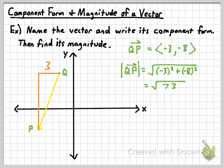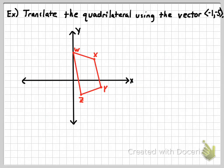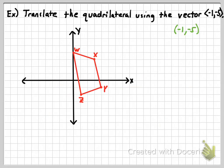Now we're learning vectors because they go along with translations, so I want to show you one example where we're actually using vectors to translate a figure. The directions say: translate the quadrilateral using the vector negative one, negative five. Very important — whenever you write the component form of a vector, make sure you use these brackets. Do not use parentheses. If I put negative one, negative five in parentheses, that's an ordered pair — just a point I could graph. You have to put it in component form using brackets when referring to a vector. Conversely, if you're referring to an ordered pair or just a point, you write it inside parentheses as you've always learned.